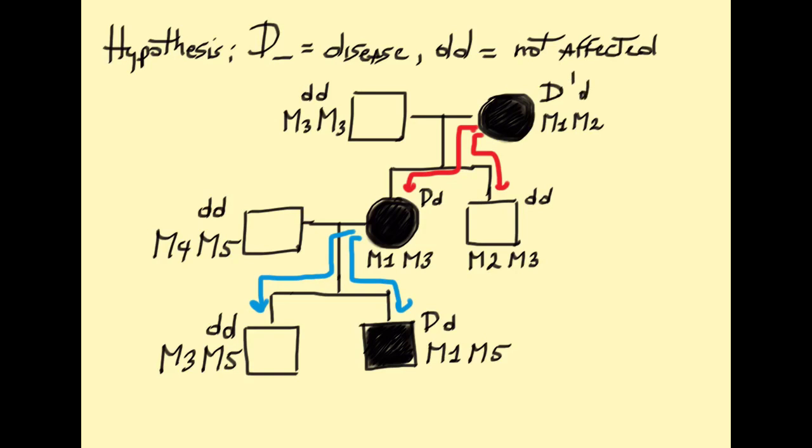We have no idea what linkage we might have, so we're going to test a bunch of different ones. But here let's start with the hypothetical linkage distance of 10 map units and assume that big D and m1 are linked in coupling. We can then calculate the probability of each path as 0.45 in each case.